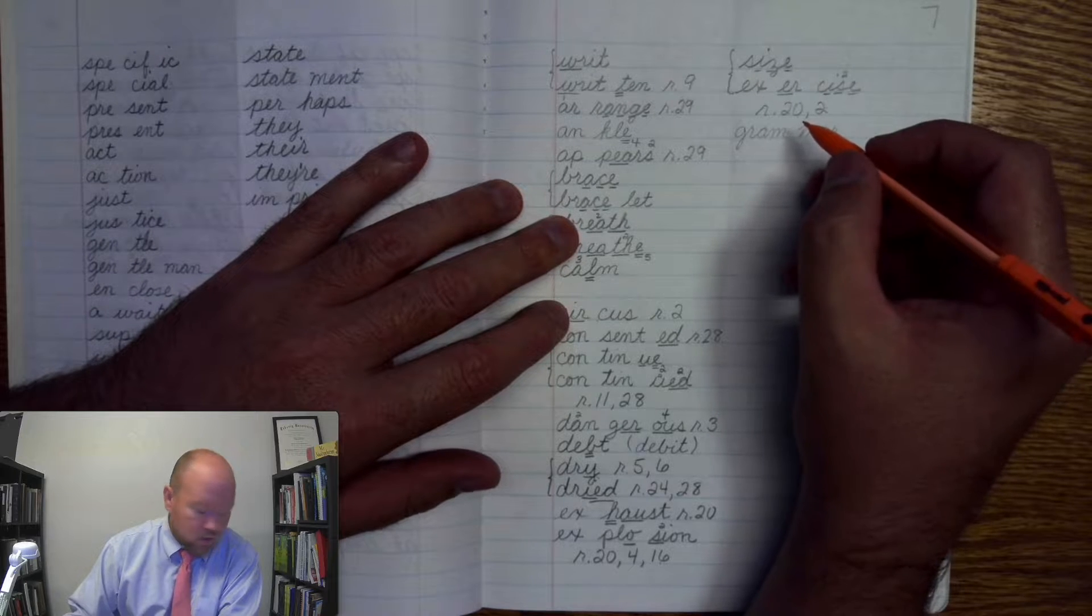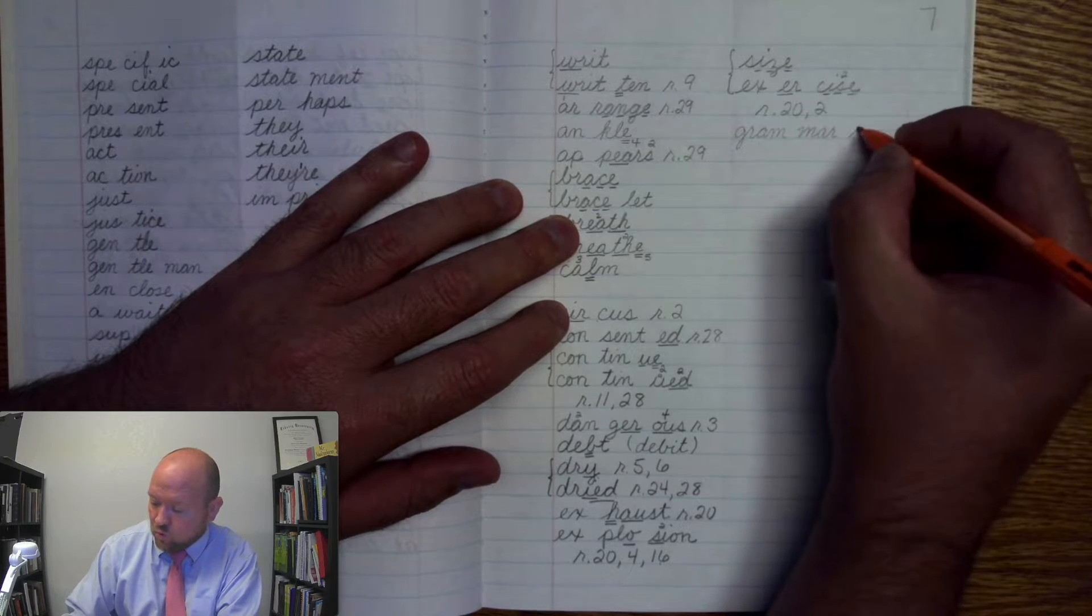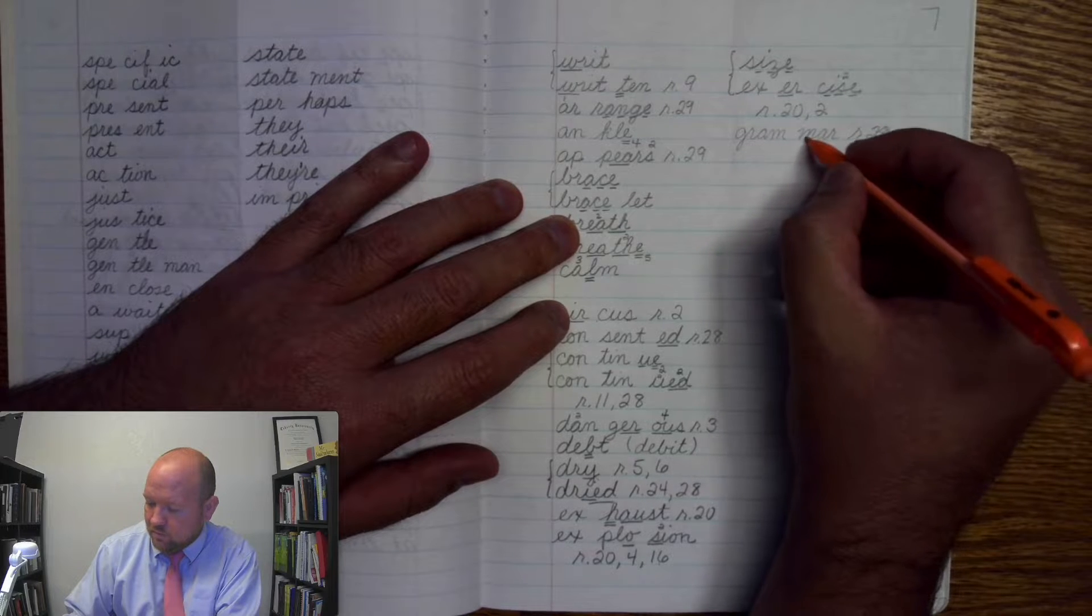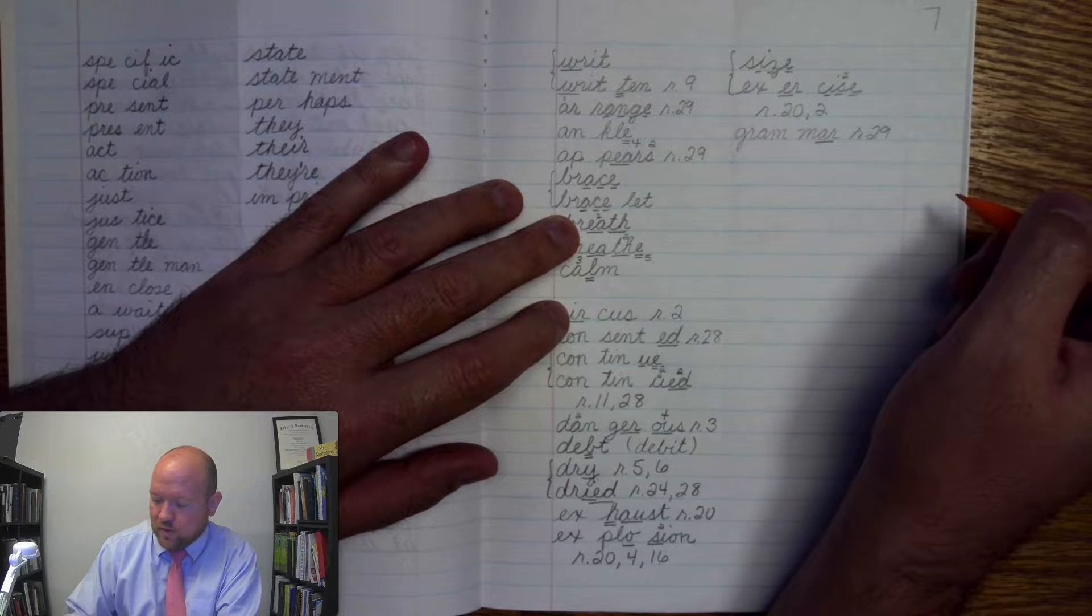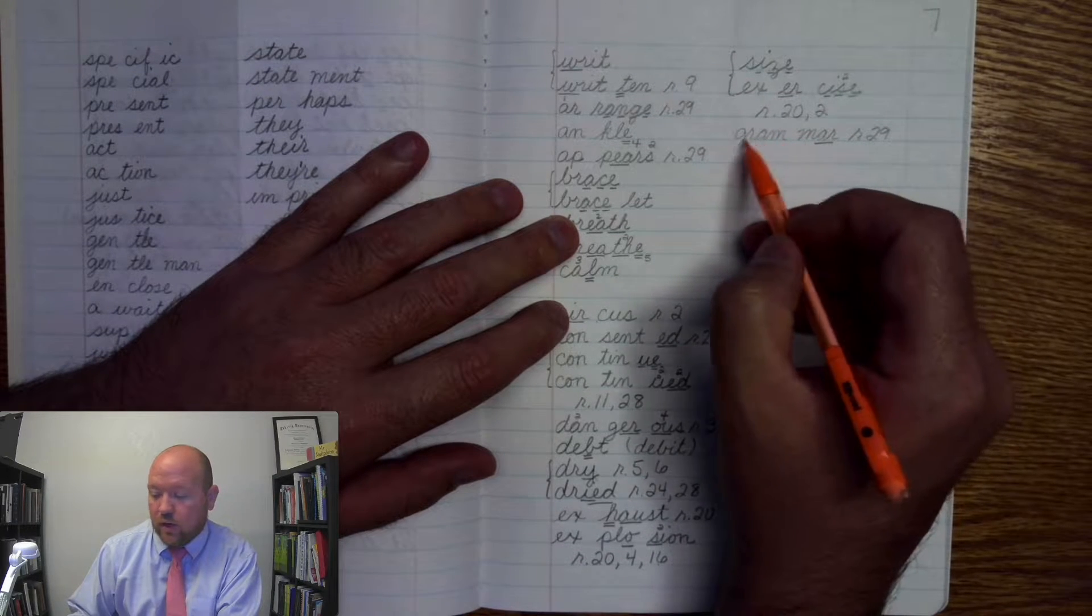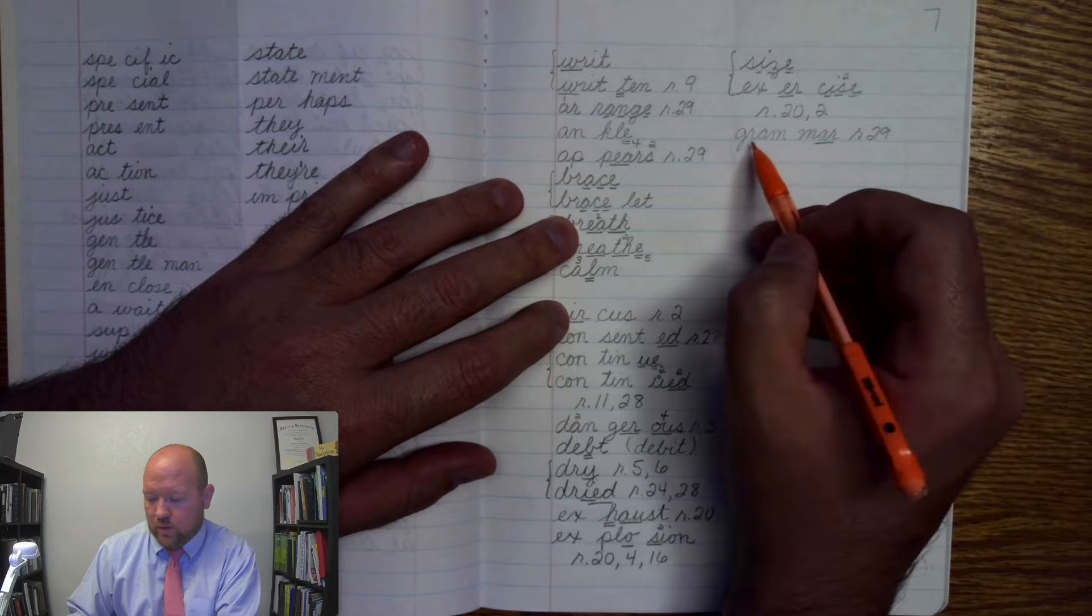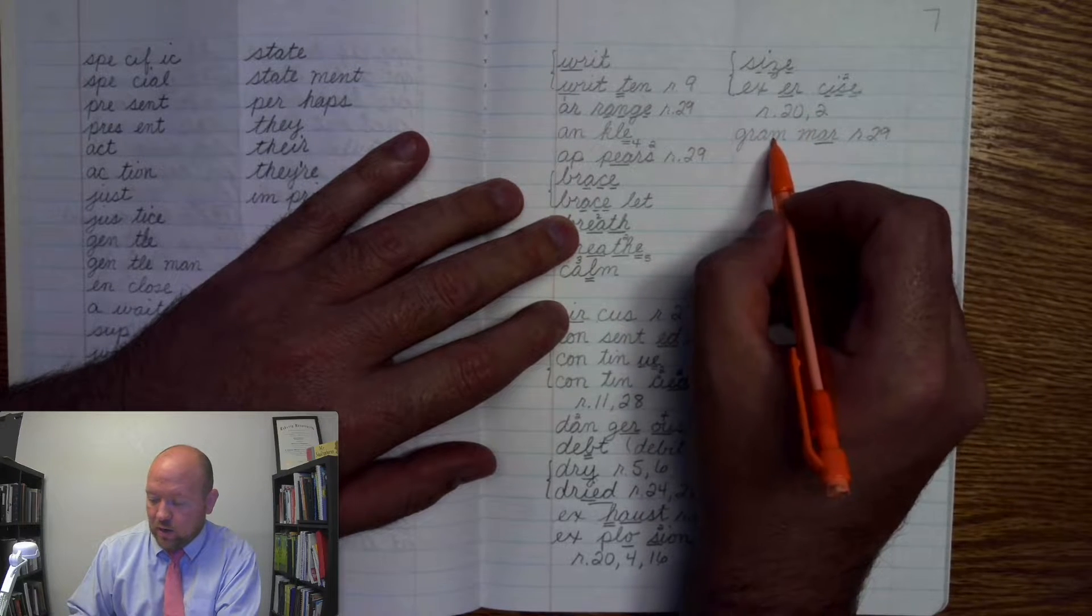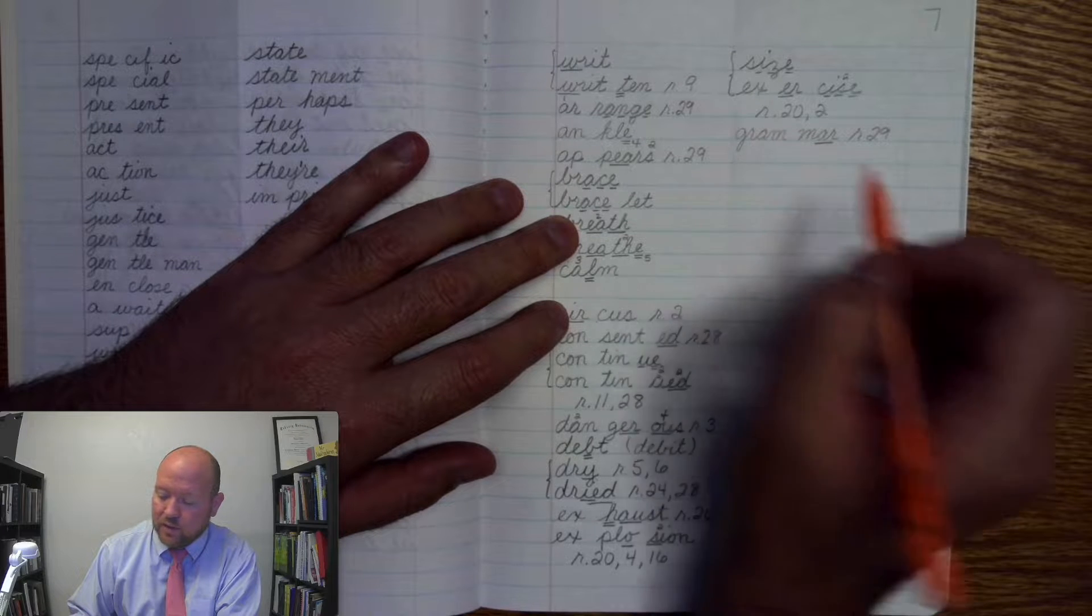Markings. G-R-A-M. Rule 29. M-A-R. And we put this M here. We don't hear it grammar. We don't hear that M. But we put it there. Otherwise, it'd be grammar. We don't want that A to be at the end of the syllable.